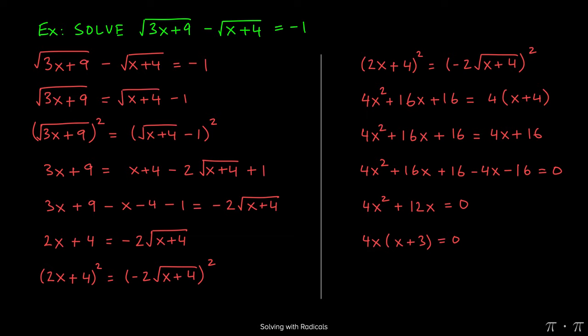Since the left-hand side is factored and the right-hand side equals zero, we can invoke the zero product property to say that either 4x must equal zero, which means x equals zero, dividing both sides by 4, or x plus 3 must equal zero, and subtracting 3 gives us x equals negative 3.